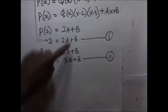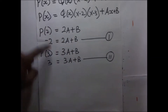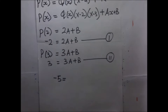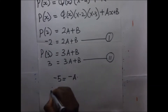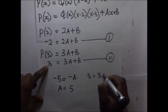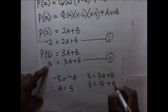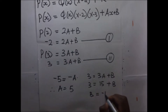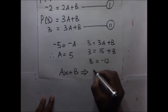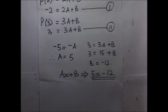We can easily eliminate B by subtracting the first equation from the second. Negative 2 minus 3 gives us negative 5, and 2A minus 3A gives us negative A. So A equals 5. Substituting back, 3 times 5 is 15, giving B equals negative 12. So the remainder is 5X minus 12.